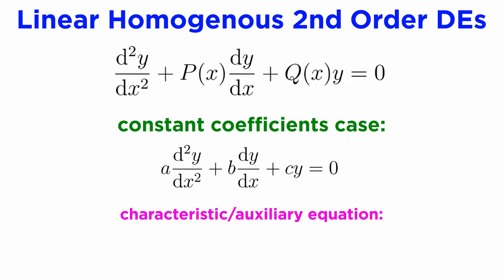To solve this, we are going to write down something called a characteristic equation, or sometimes known as an auxiliary equation. We convert the derivatives into powers of an unknown variable lambda, giving us a times lambda squared plus b times lambda plus c, which is a quadratic equation in lambda.